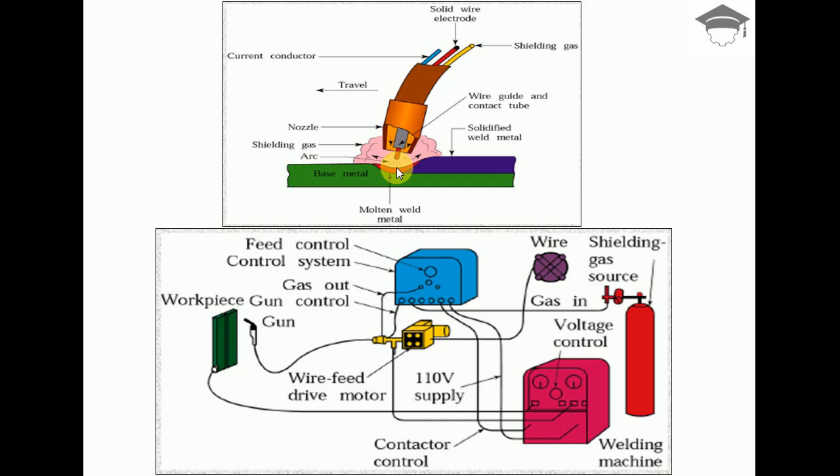First, it gets consumed in the process because it's a consumable type electrode. Second, it starts the arc. The wire's feed rate depends on the application, the thickness of the base metal, and the type of base metal. We have to set all these parameters in the feed control system.